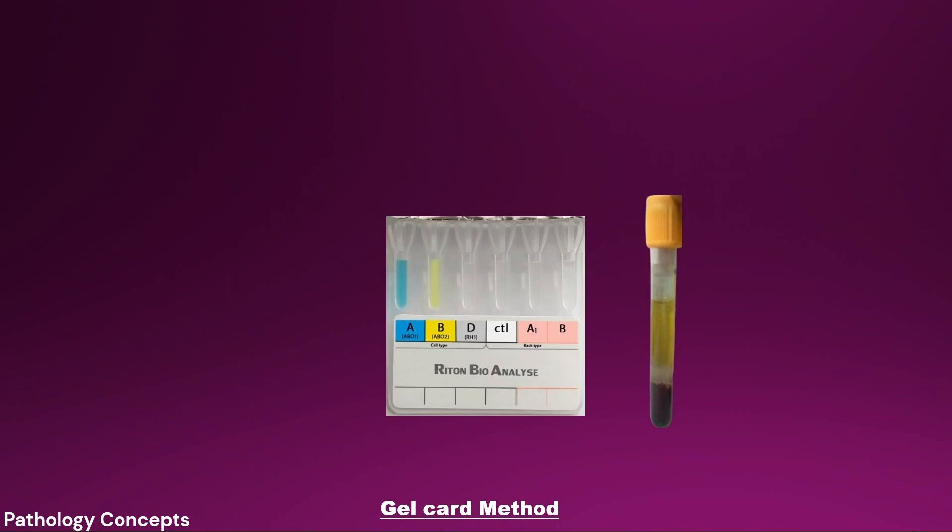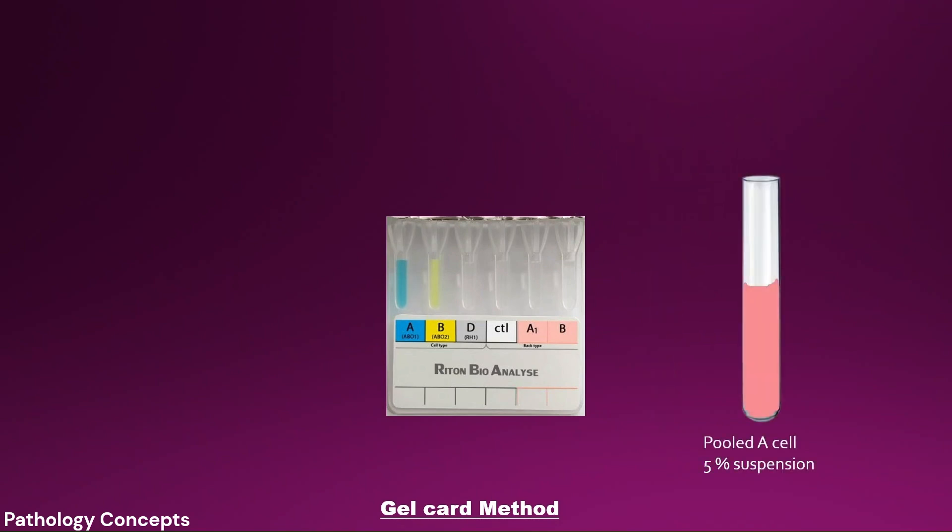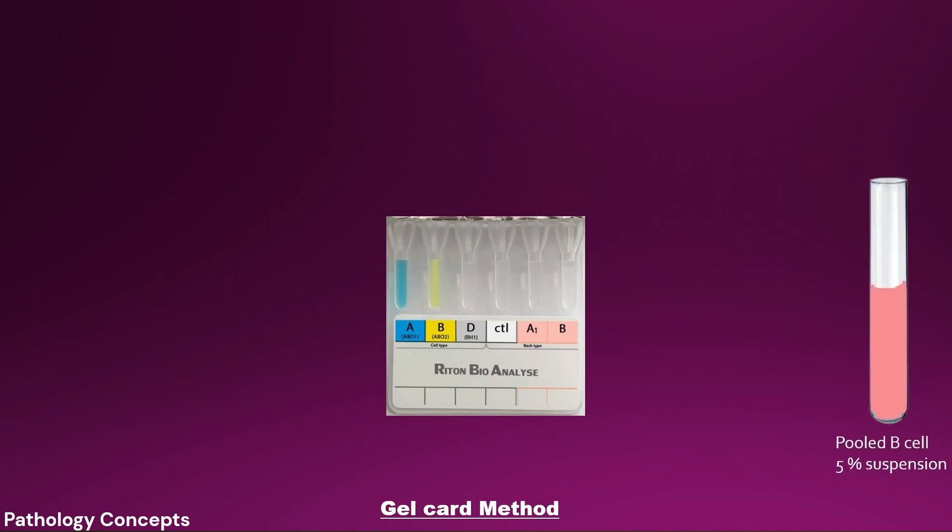Take the patient's plasma or serum. Add 50 microliters of the patient's serum into the A1 well and B well. Add 50 microliters of the pooled B cell suspension into the B cell well. Centrifuge this gel card for 5 minutes and observe the agglutination.